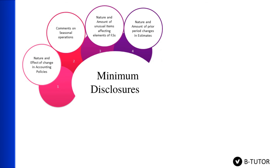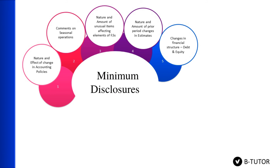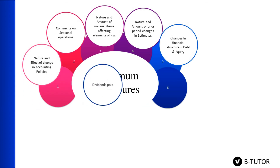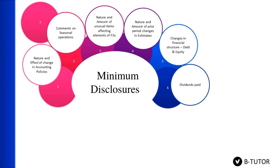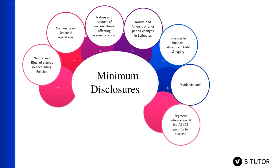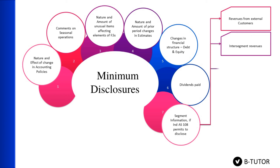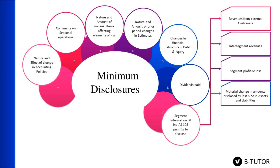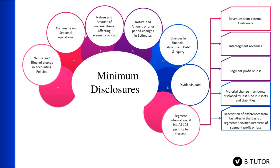Number five: any changes in financial structure — that is debt or equity, redemptions or issues during the current interim period — must be disclosed. Number six: any dividends paid during the interim period must be disclosed. Number seven: segment information disclosures. This can be disclosed only if IAS 108 permits disclosure. Under this, we need to disclose revenues from external customers as well as inter-segment revenues, then segment profit or loss, any material change in amounts disclosed by the last financials in assets or liabilities, any deviation from the basis of segmentation or measurement of segment profit or loss, and finally the reconciliation of total reportable segments and discontinued operations.